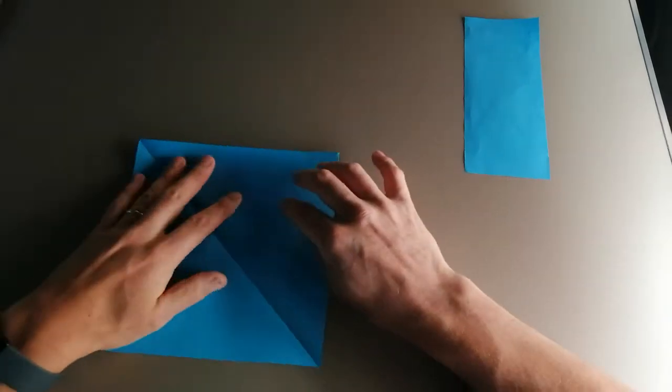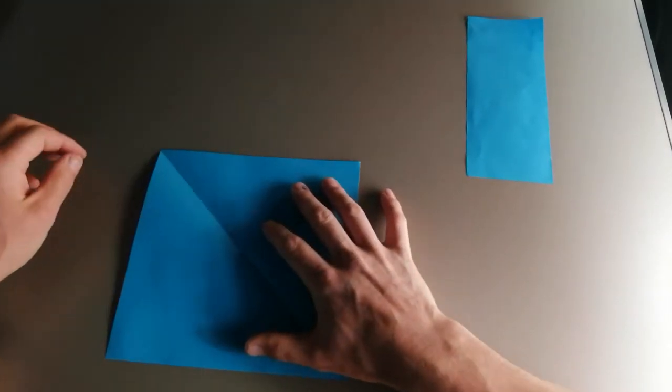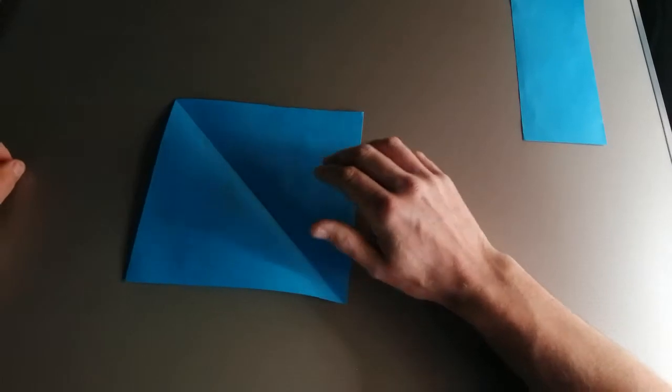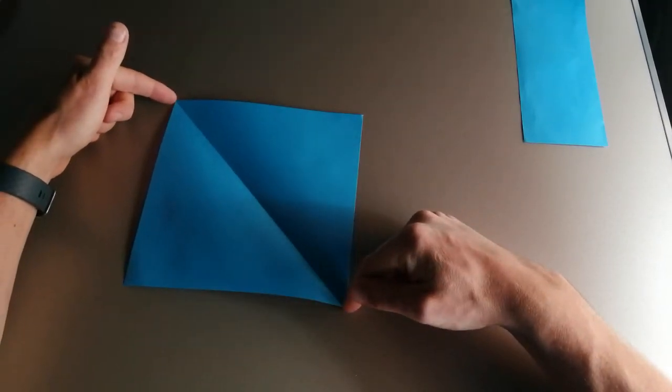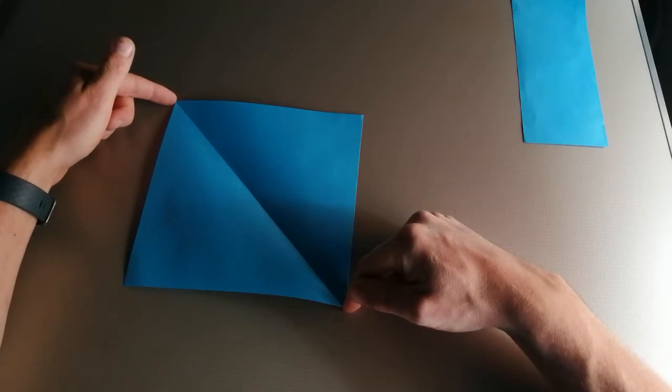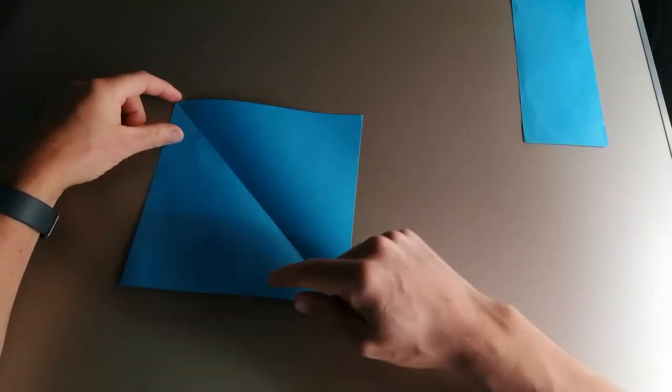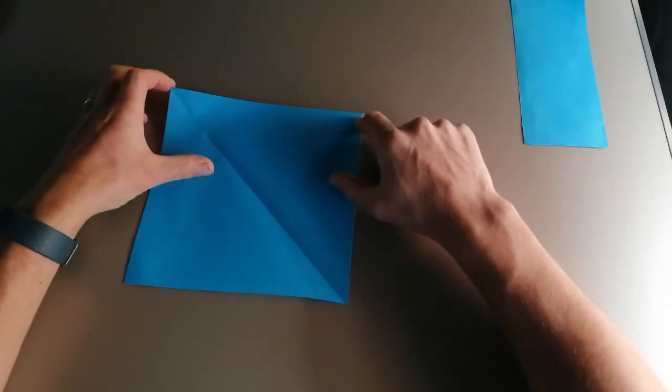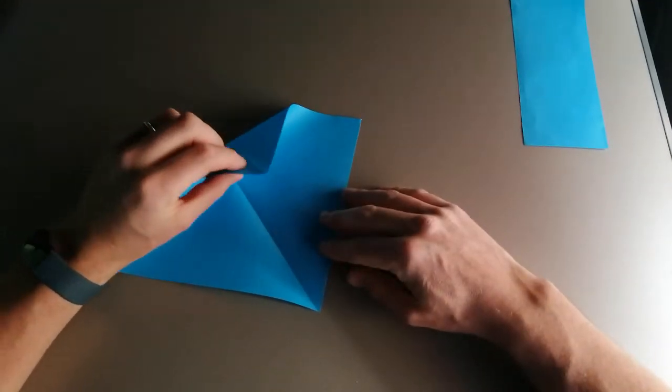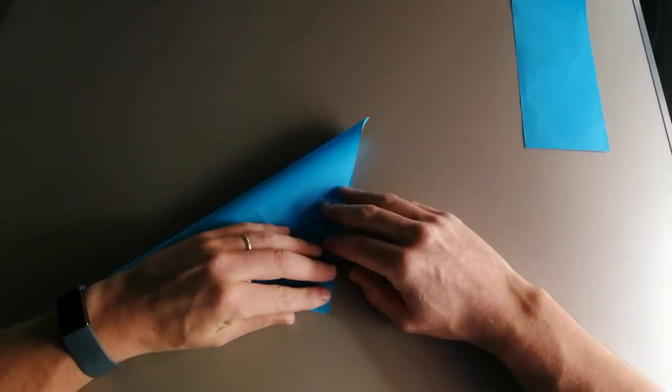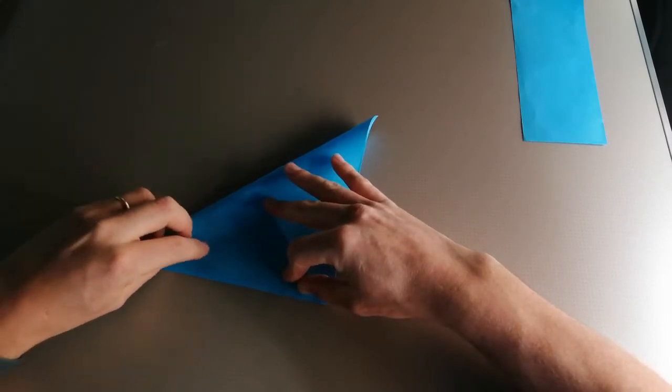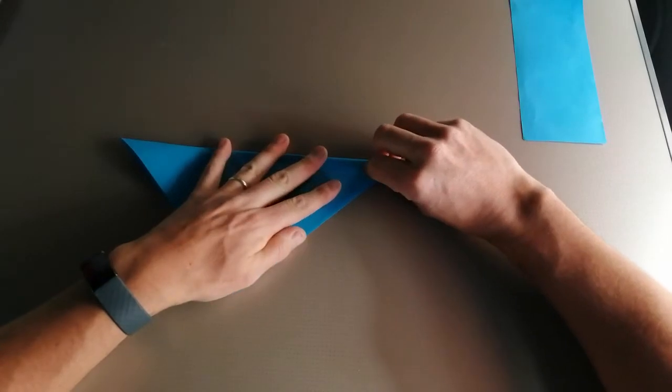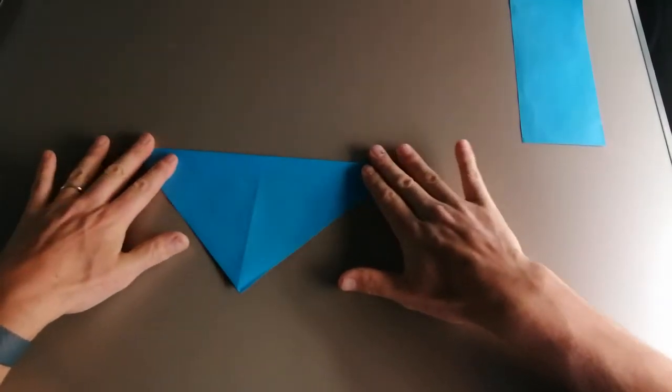Opening up now, you can see that we have a square piece of paper with a diagonal crease running from one corner to the other. Now we want to create another diagonal line from this corner to this corner. So to achieve that, we will take this edge and fold it on down.